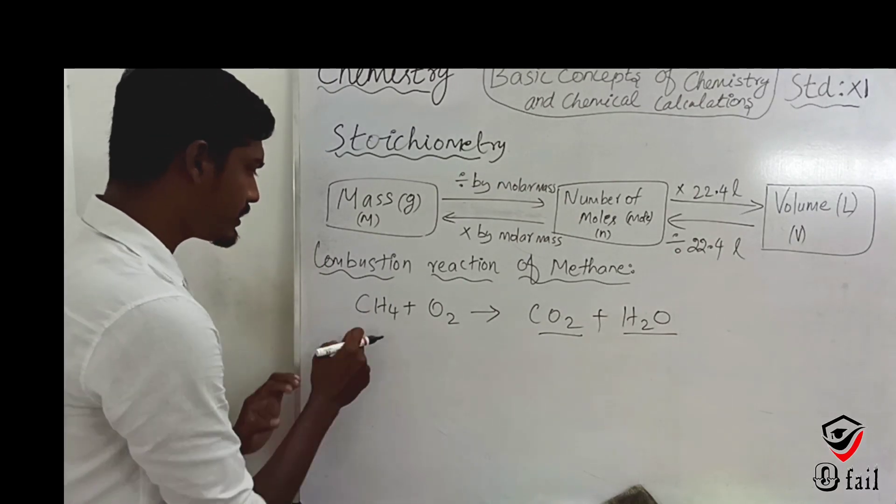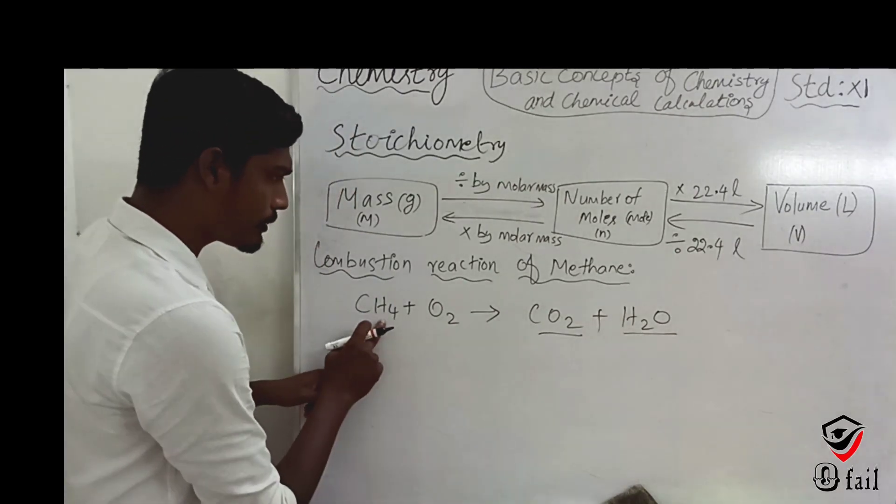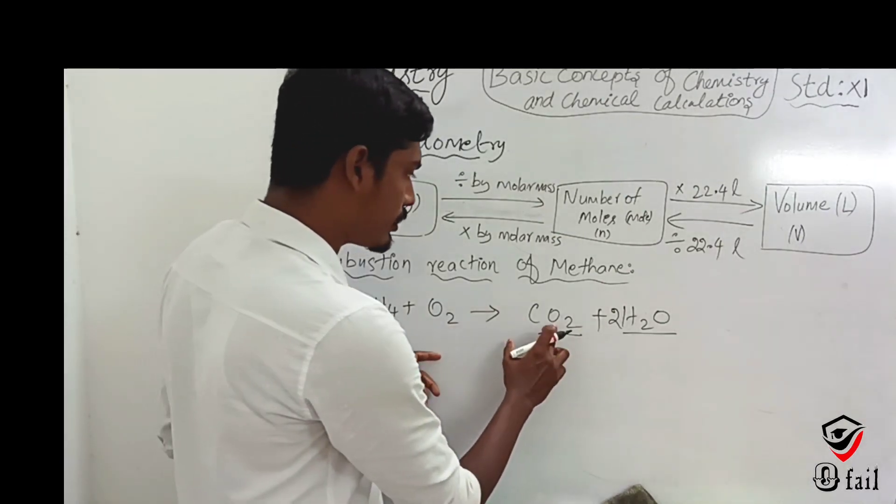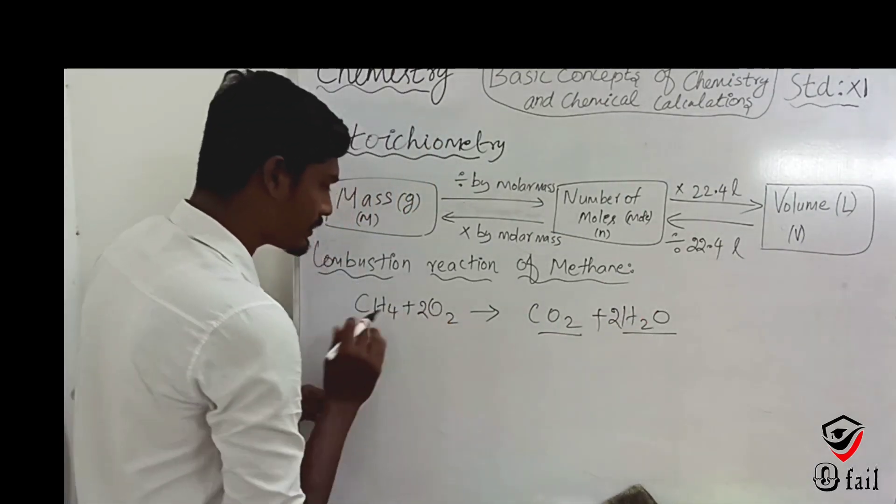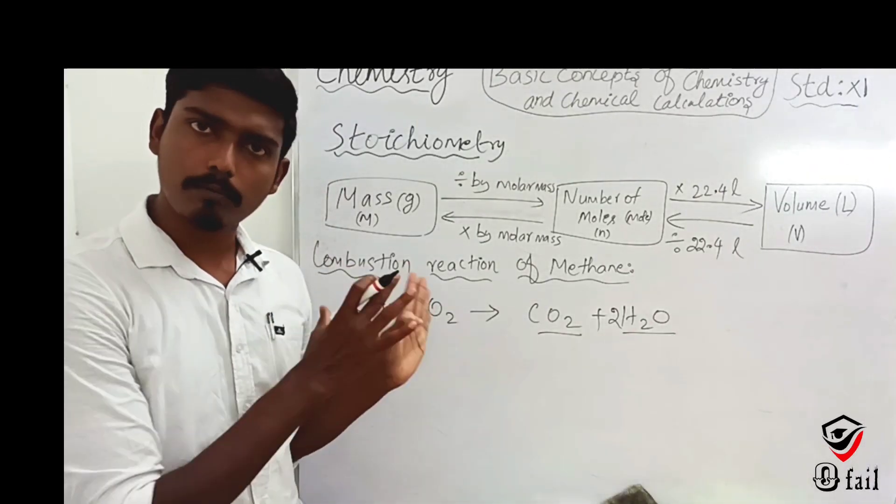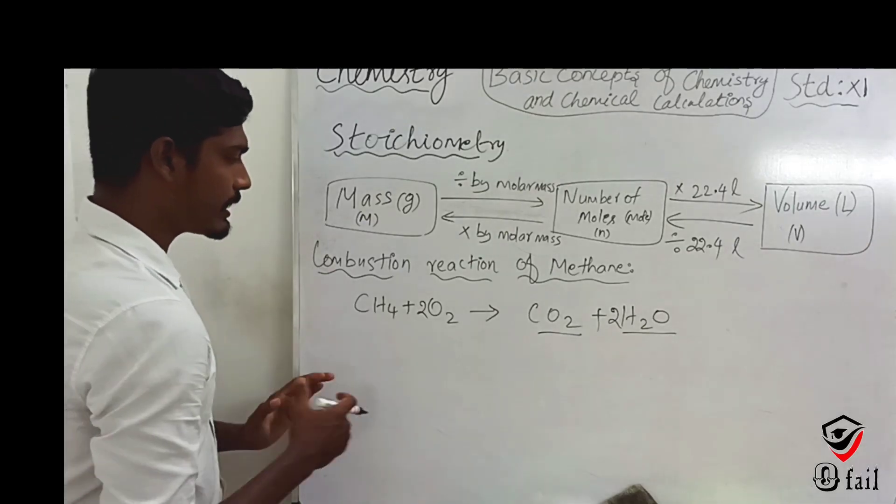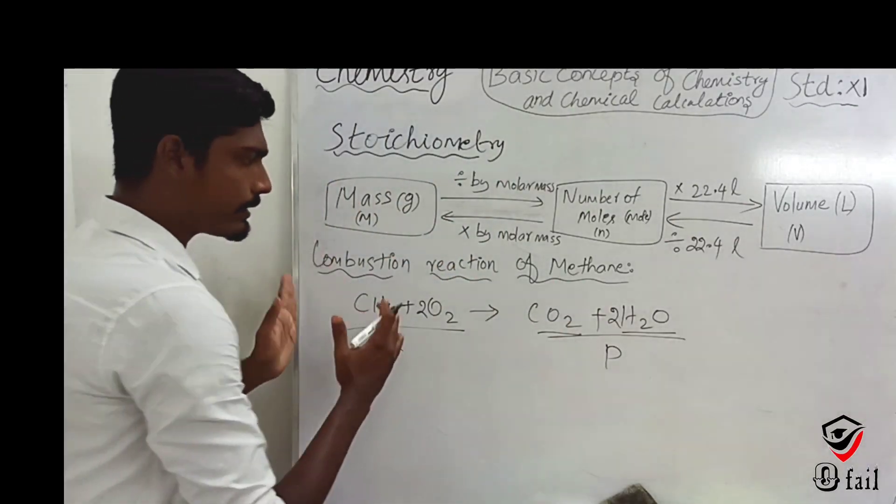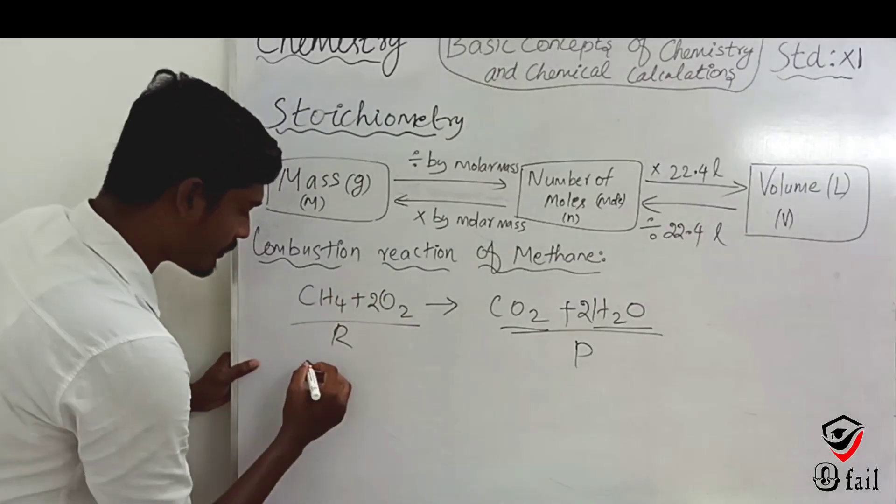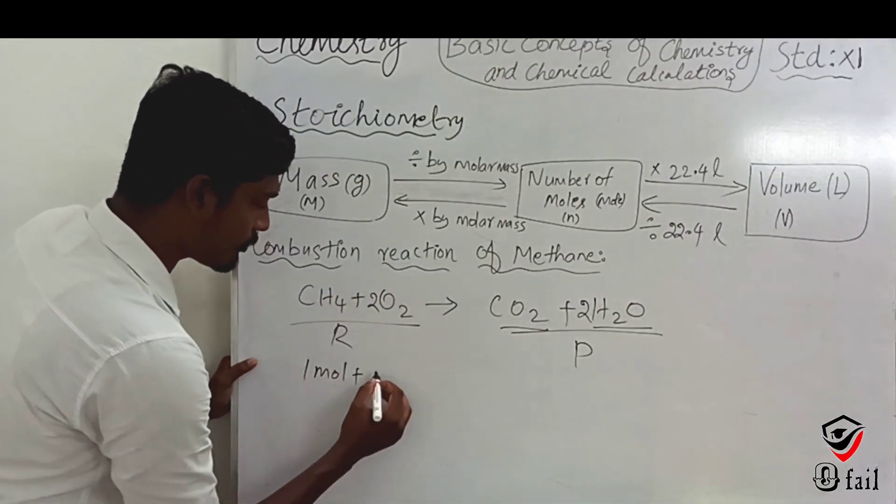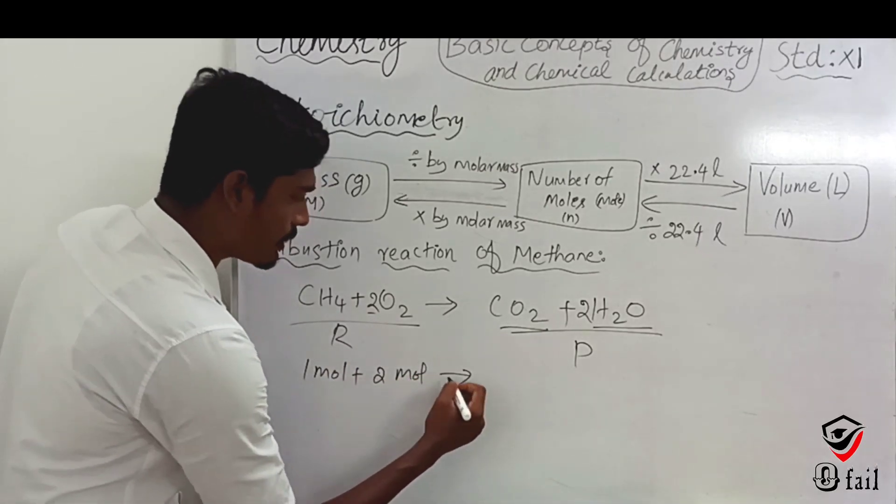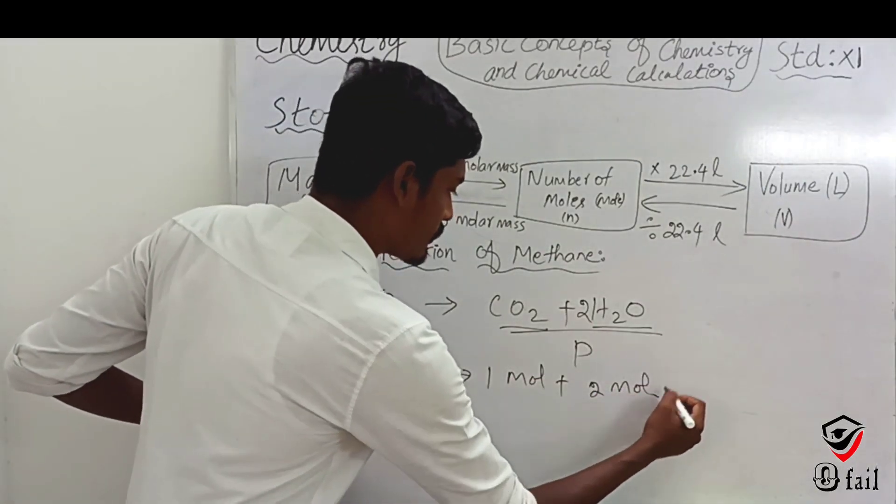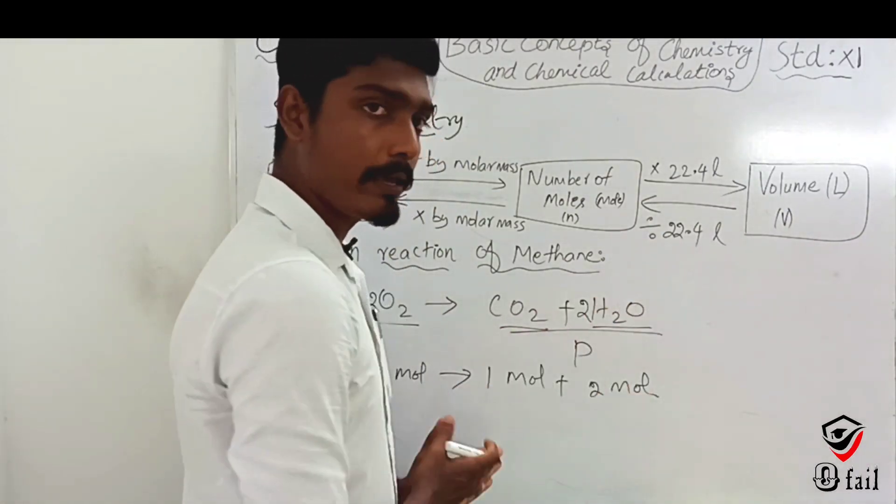Now let's balance the equation. Carbon: 1 on each side, no problem. Hydrogen: 4 on left, 2 on right, so we put 2 in front of water. Oxygen: counting gives us 2 molecules needed on the left. So the balanced equation is CH4 + 2O2 → CO2 + 2H2O. This is our reactant and product.